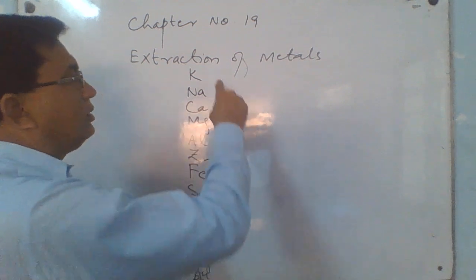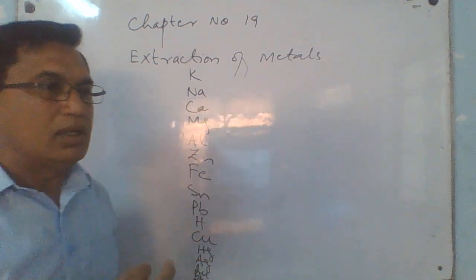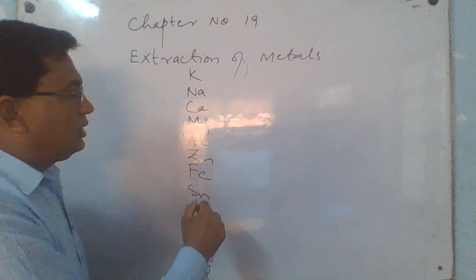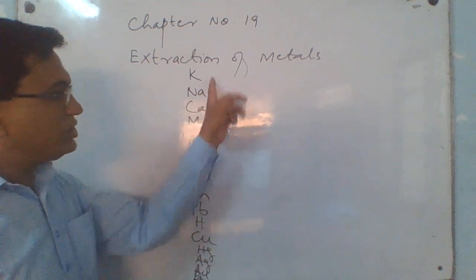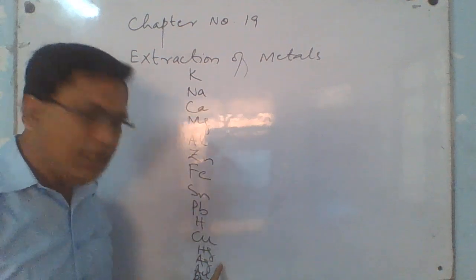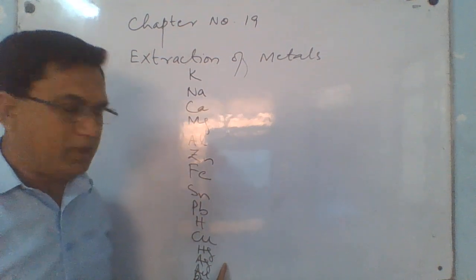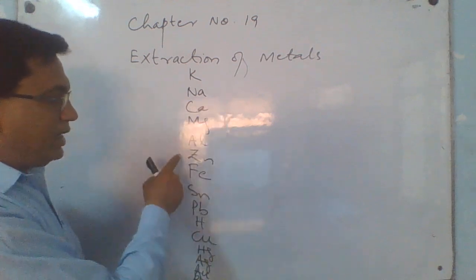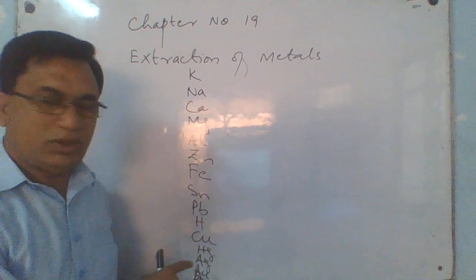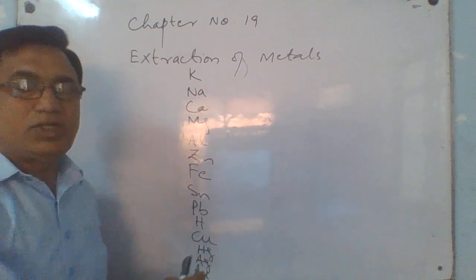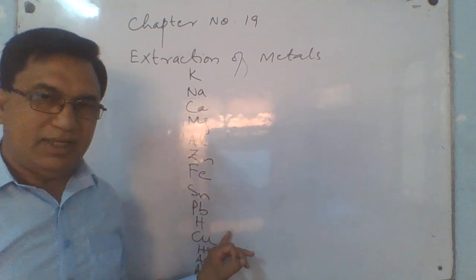The reactivity series tells us that the most reactive metals have the most stable compounds, and less reactive metals have less stable compounds. The method to extract the metal from their ores depends upon the stability of the compounds of all these metals.